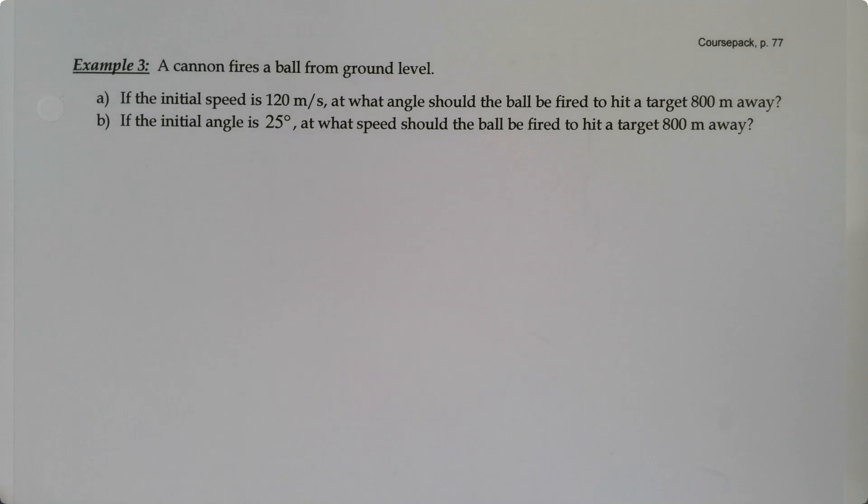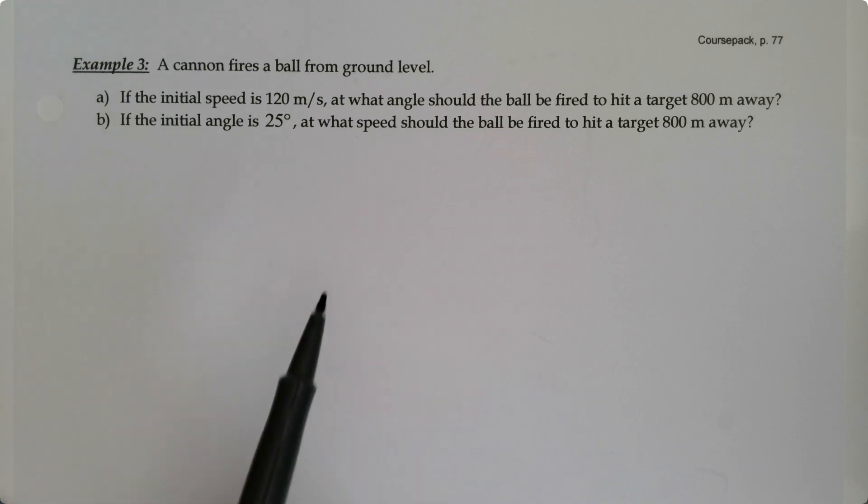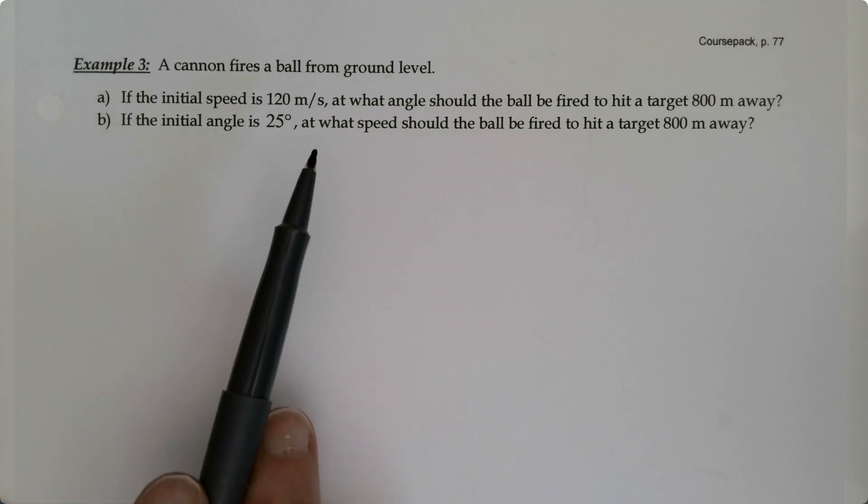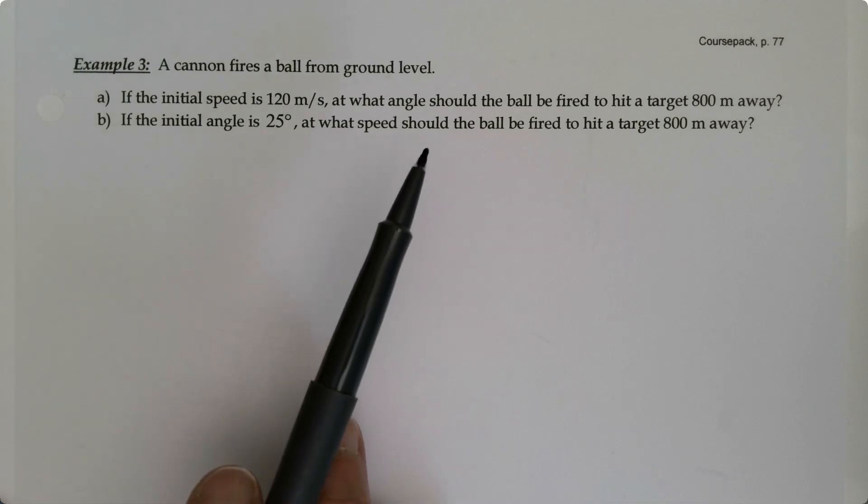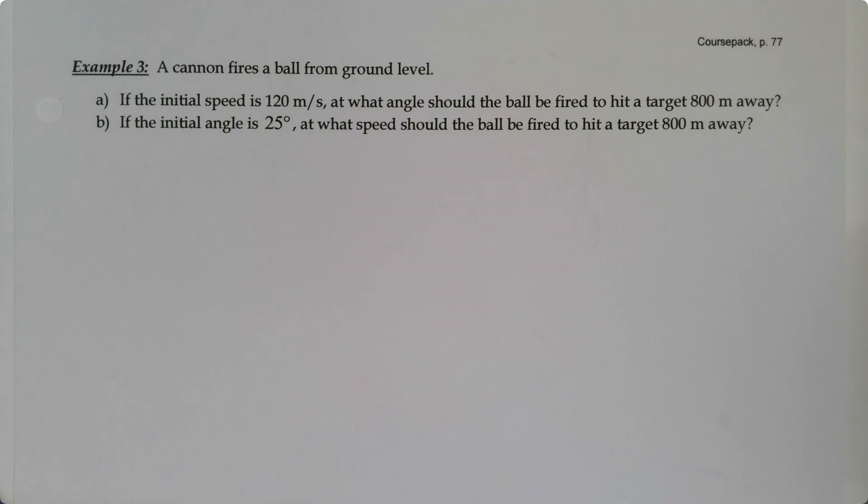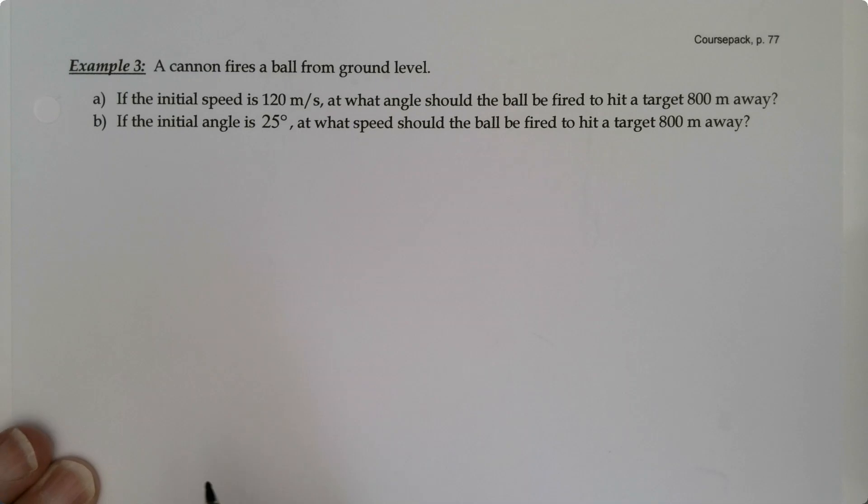In this example we're going to keep on practicing our projectile motion with two dimensions. We have a cannon firing a ball from ground level. If the initial speed is 120 meters per second, at what angle should the ball be fired to hit a target 800 meters away? It's two different sides kind of at the same coin. So let's look at part A.